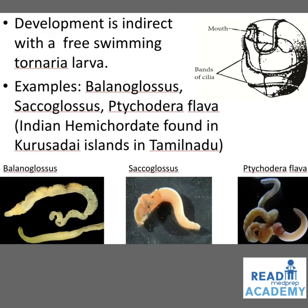Sexes are separate and exhibit sexual mode of reproduction. Fertilization is external. Development is indirect with a free-swimming tornaria larva. You can see the image of the tornaria larva on the right side — it has a mouth and bands of cilia. Examples of Hemichordata: Balanoglossus, Saccoglossus, and Ptychodera flava, an Indian hemichordate found in Kurusadai Islands in Tamil Nadu. You can see the images of Balanoglossus on the left, Saccoglossus in the middle, and Ptychodera flava on the right.